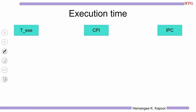How do I measure execution time? I will use TEXE to represent it. Your program has instructions, and the time taken to complete all those instructions is the execution time. The formula has the instruction count (IC) — how many instructions you have — multiplied by how much time every instruction takes. The popular term for this is clocks per instruction, or CPI.